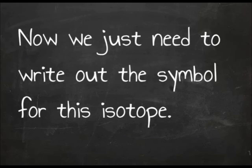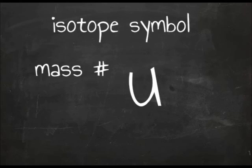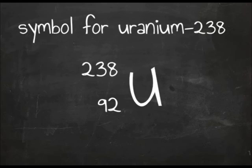Now we just need to write out the symbol for this isotope. Isotope symbol, U for uranium, mass number, and atomic number. The symbol for uranium-238 is 238, 92, U.